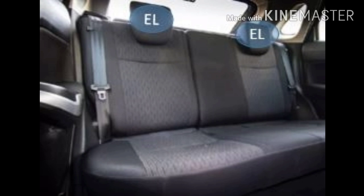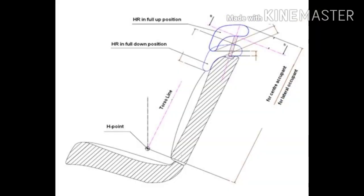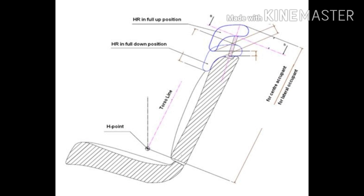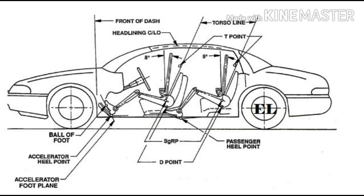We are going to see how the locating points of a seat are decided in the vehicle. Many locating points are used to define the occupant's location in a vehicle, such as eye ellipse, sitting reference point, H point, D point, accelerator heel point, and hand reach envelope. Now we are going to see the heel point.